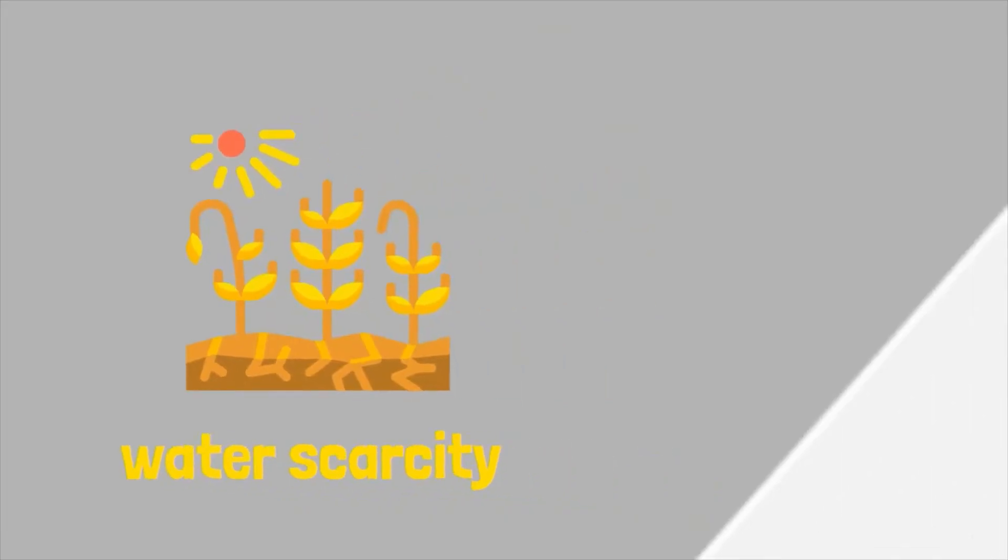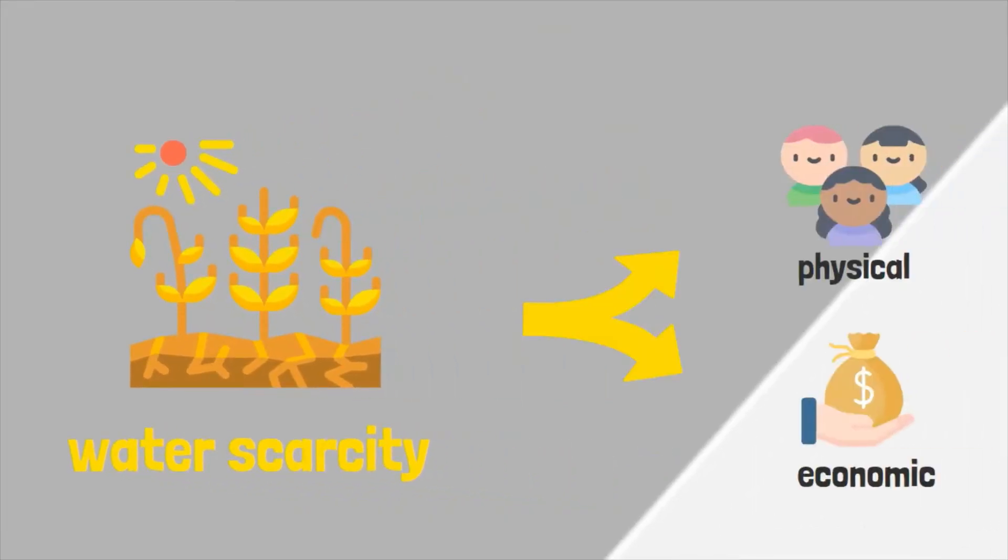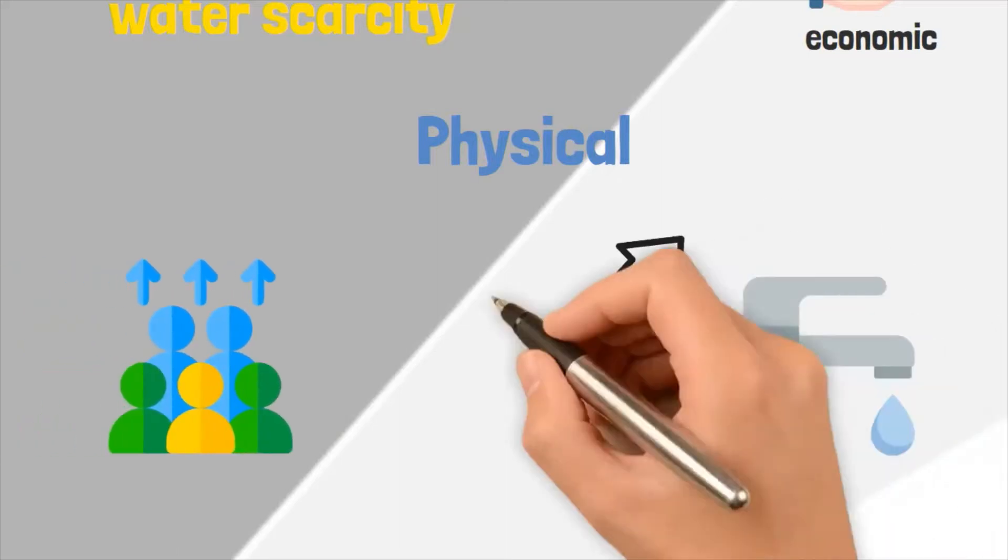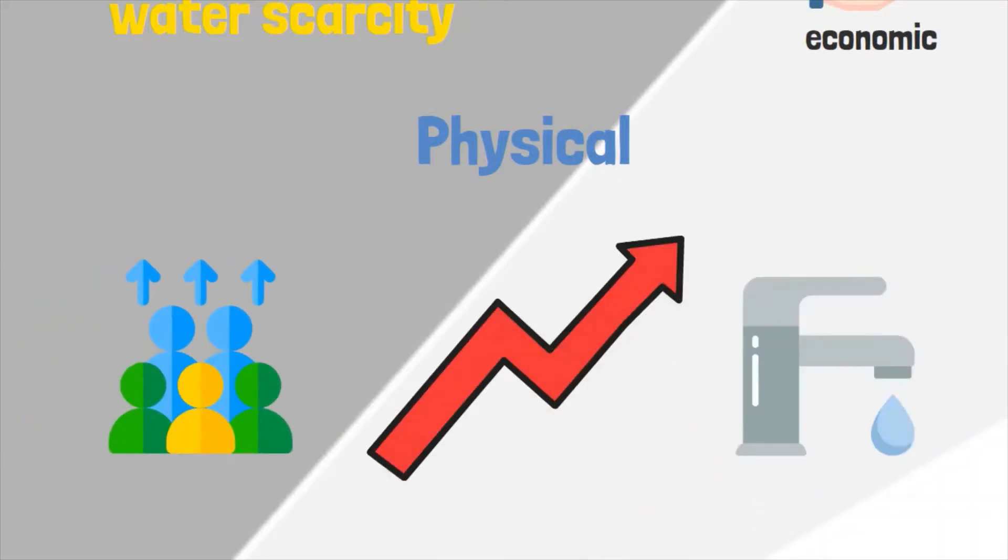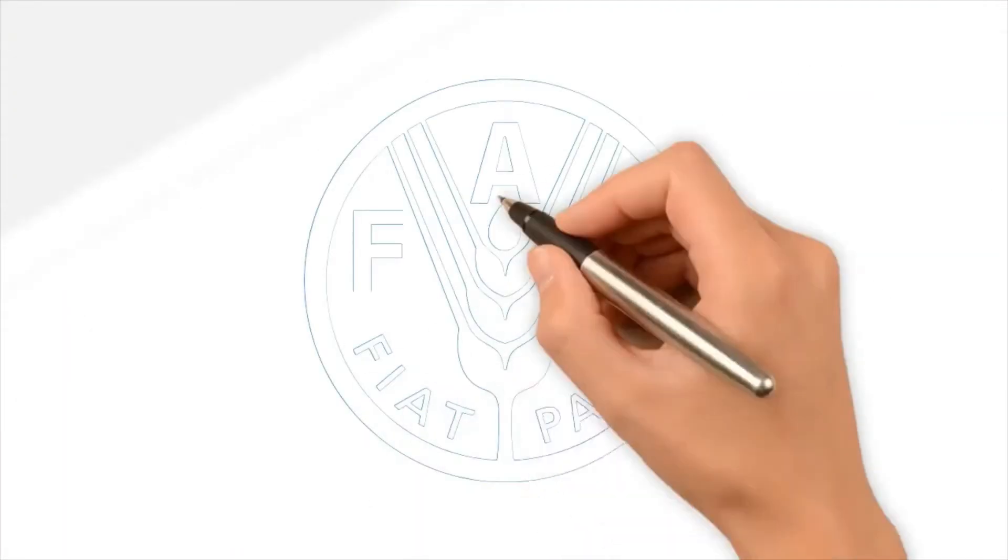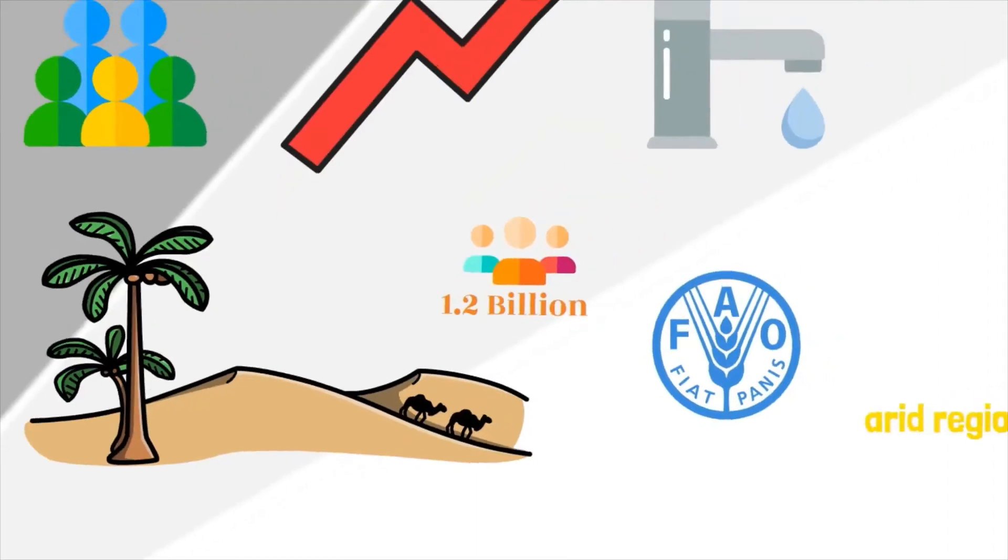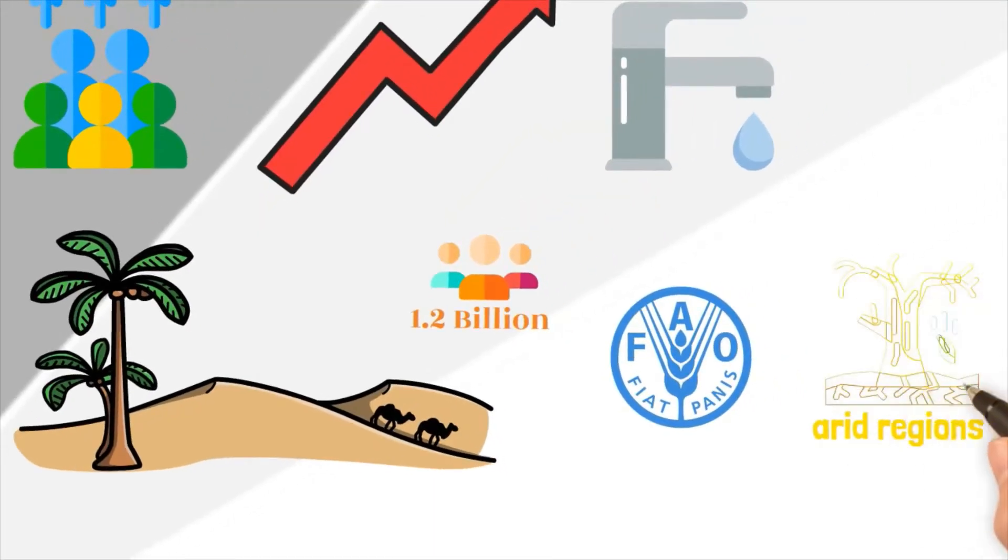There are two general types of water scarcity, physical and economic. Physical, or absolute, water scarcity is the result of a region's demand outpacing the limited water resources found there. According to the Food and Agricultural Organization of the United Nations, around 1.2 billion people live in areas of physical scarcity. Many of these people live in arid or semi-arid regions.